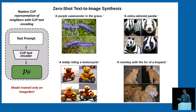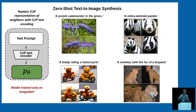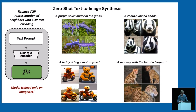This gives us a model able to synthesize images based on text prompts, although it has never seen text prompts during training. It was trained on ImageNet — one million images, a rather small dataset by today's standards, without text annotations — but we can still do creative text-image synthesis. We can synthesize zebra-skin pandas, teddy bears riding motorcycles — images definitely not in the ImageNet database. So this is quite cool.